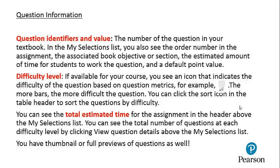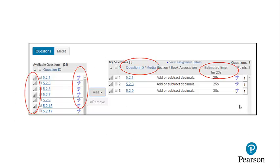You can see the total estimated time for the assignment in the header above the My Selections list. You can also see the total number of questions at each difficulty level by clicking View Question Details above the My Selections list. You have thumbnail or full previews of questions as well.